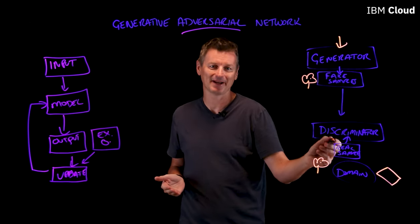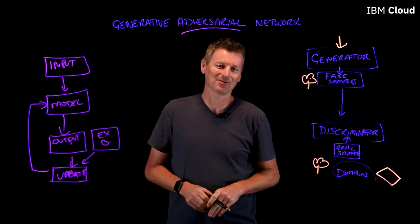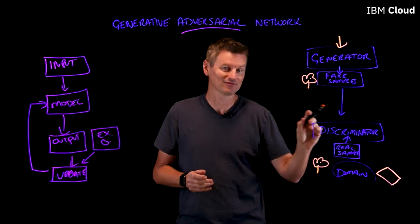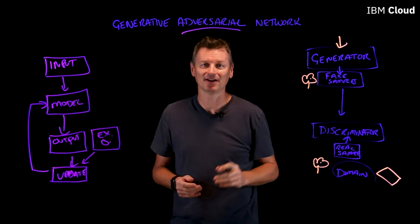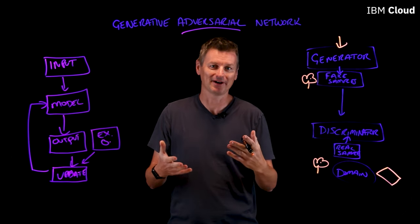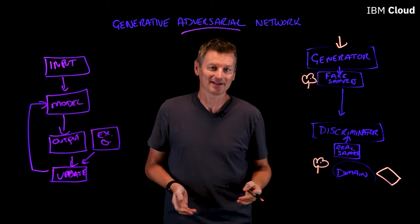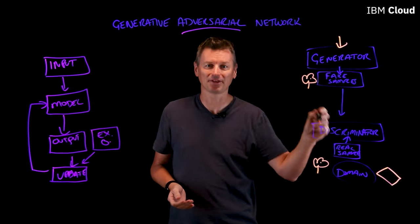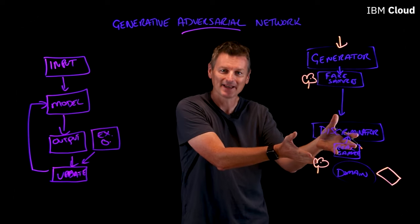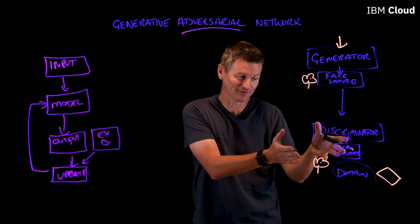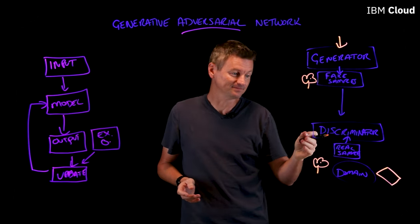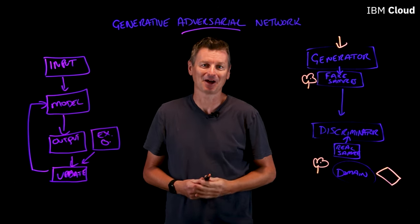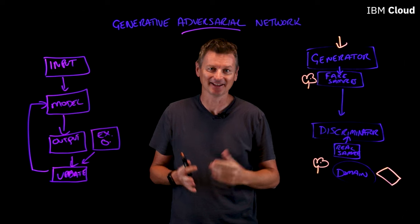If the Discriminator successfully spotted that the flower was a fake image, the Discriminator remains unchanged but the Generator will need to update its model to generate better fakes. Whereas if the reverse is true and the Generator created something that fooled the Discriminator, the Discriminator model will need to be updated in order to better tell when a fake sample is coming in, so it's fooled less easily.